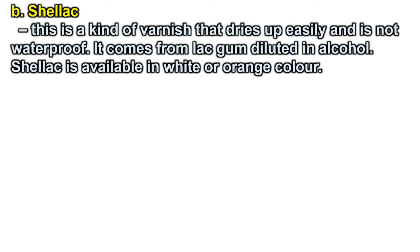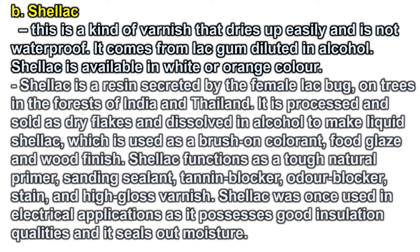B — Shellac: this is a kind of varnish that dries up easily and is not waterproof. It comes from lac gum diluted in alcohol. Shellac is available in white or orange color. It is a resin secreted by the female lac bug on trees in the forests of India and Thailand, processed and sold as dry flakes dissolved in alcohol to make liquid shellac, used as a brush-on colorant, food glaze, and wood finish. Shellac functions as a tough natural primer, sanding sealant, tannin blocker, odor blocker, stain, and high-gloss varnish. It also possesses good insulation qualities and seals out moisture.